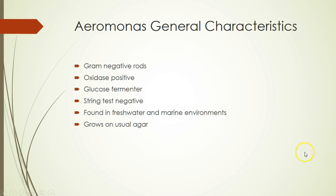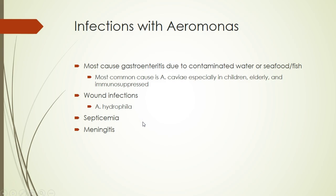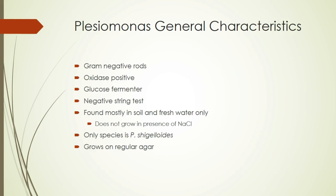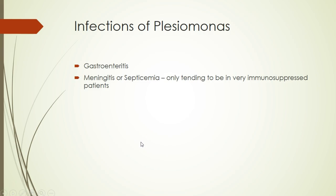Aeromonas is also found in water environments. It's a gram-negative rod, oxidase positive, but string test negative — that will help separate Aeromonas from the Vibrios, which are all string test positive. Infections include gastroenteritis from contaminated water or contaminated fish and seafood, as well as some wound infections. Plesiomonas is also found in water environments — gram-negative rod, oxidase positive, string test negative. The only species is Plesiomonas shigelloides, which causes gastroenteritis.